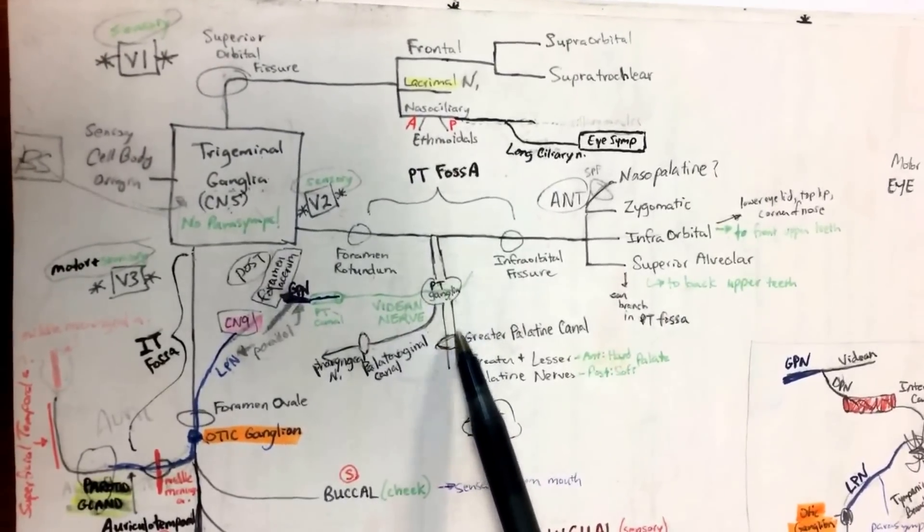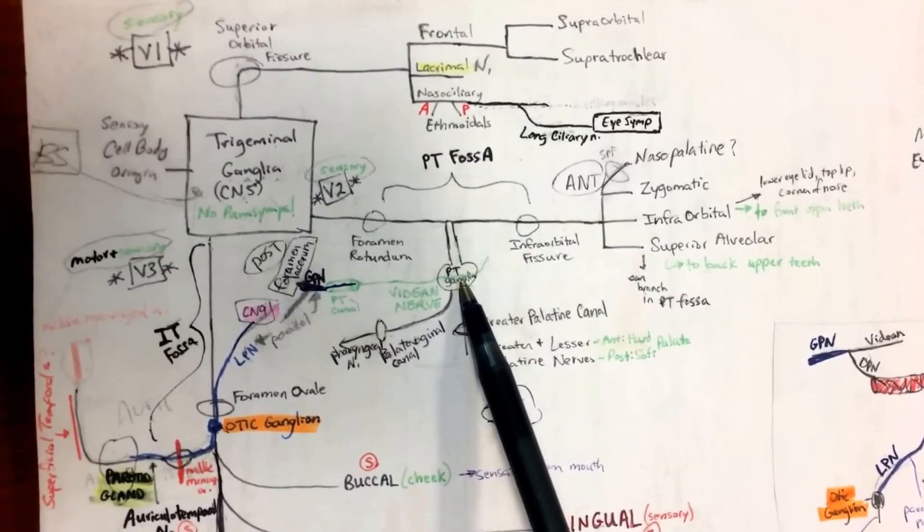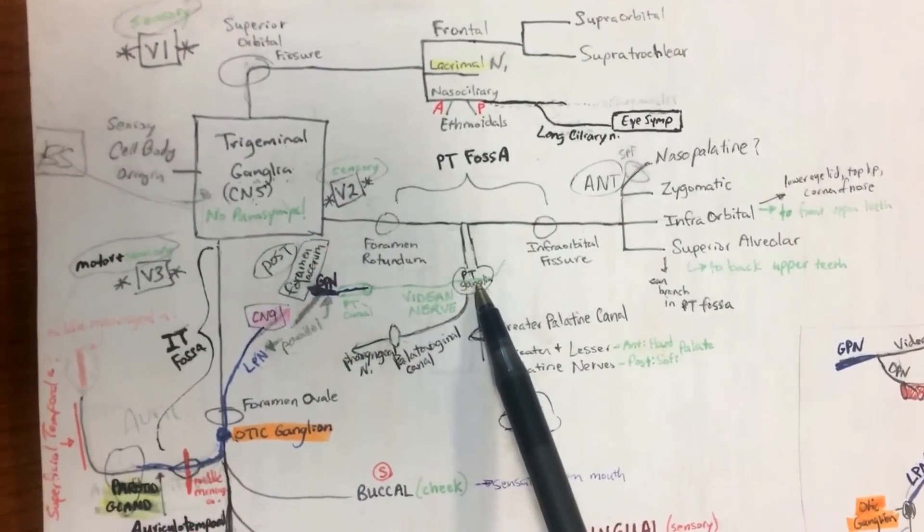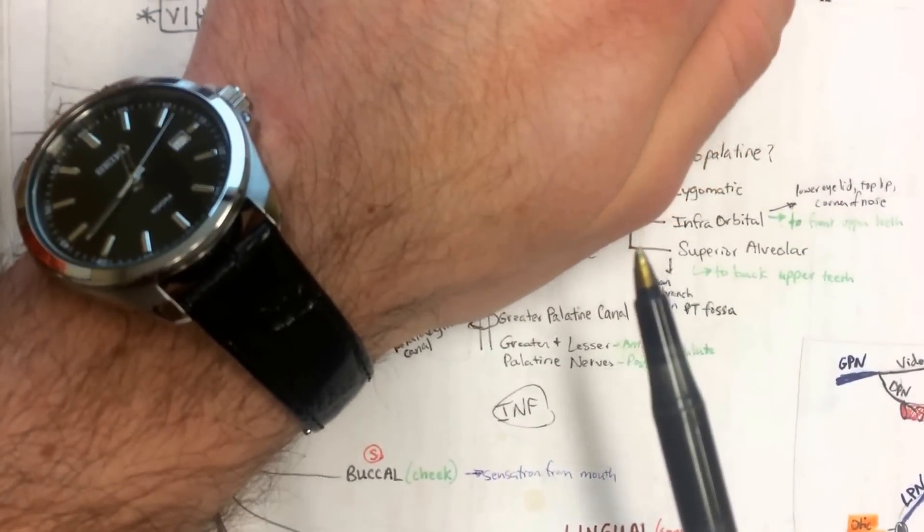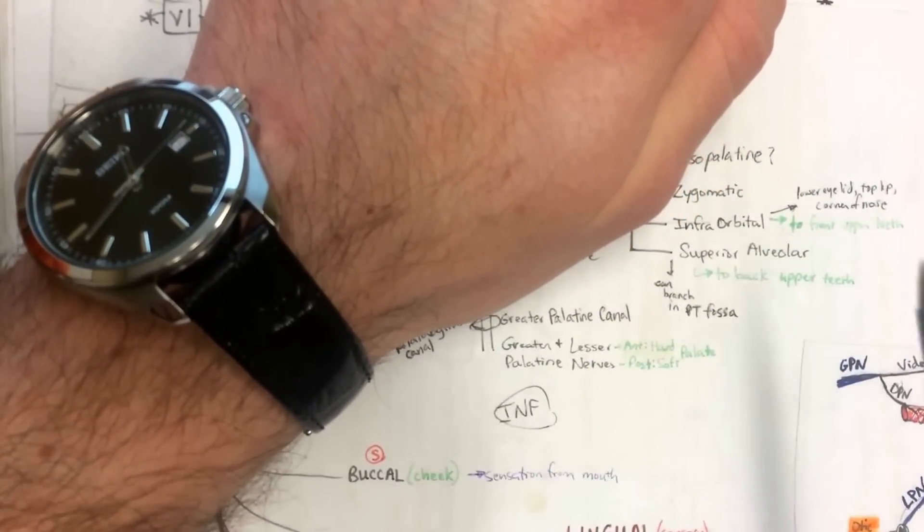So if this is your PT fossa, obviously dangling down, you're going to have the PT ganglia, which you should remember from earlier. The PT ganglia had what coming through it? Vidian nerve.